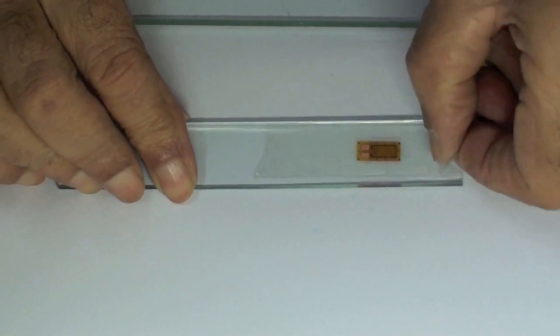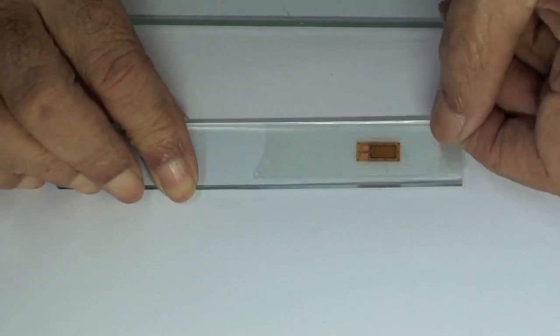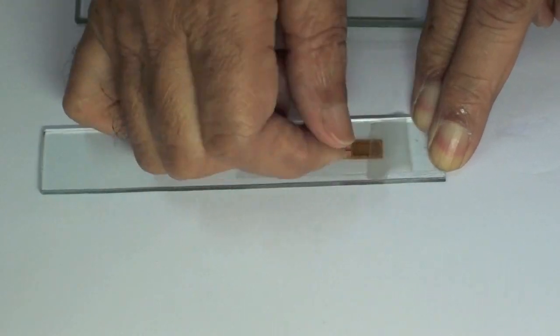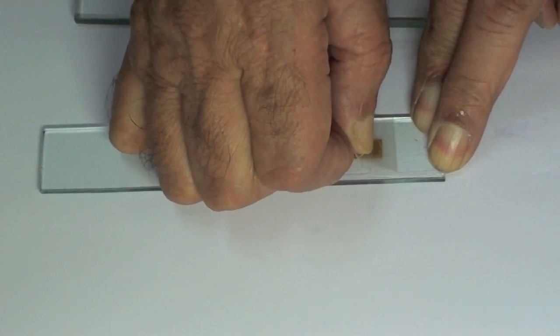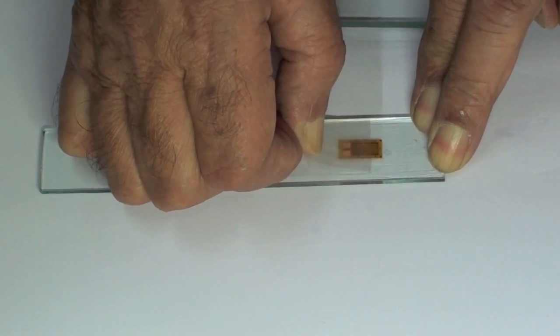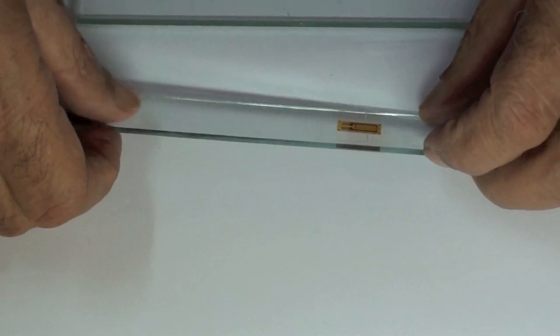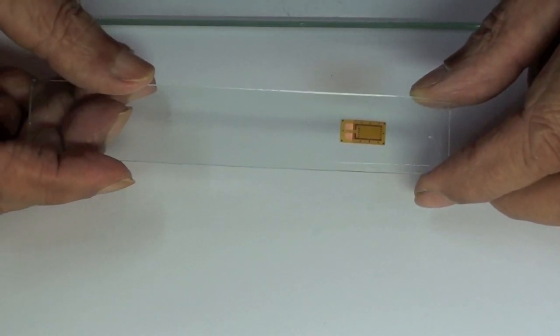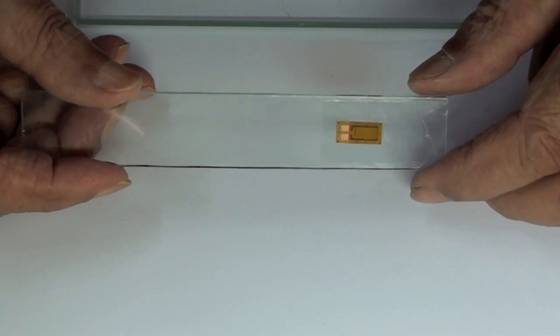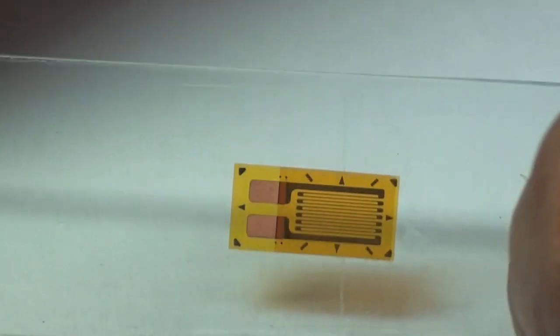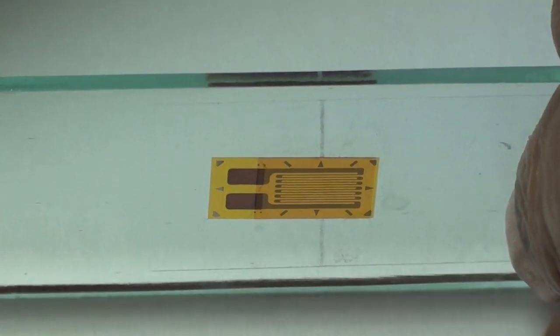Then the tape is removed by peeling it back on itself along the surface. The gauge is examined visually for any apparent defects such as unevenness or bulging or inadequate spread of the adhesive or air bubbles under the gauge.